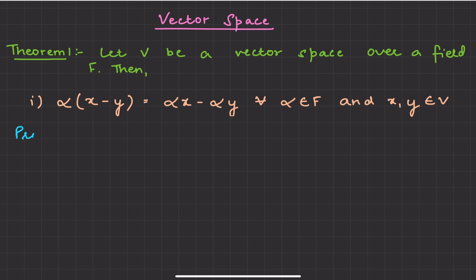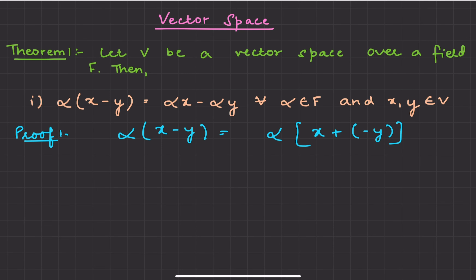For this, we use a simple approach. Look, alpha times (x minus y) — I can write this as alpha times (x plus minus y), right? The difference being minus becomes plus minus. Now, we know what the field element alpha is, and here alpha applies the left distributive property.